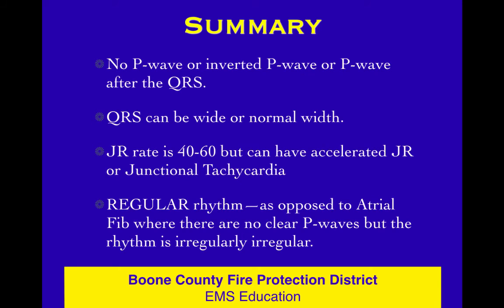Summary: there's no P-wave, or it might be inverted or after the QRS. The QRS can be wide if it's got a bundle branch block with it, or it could be normal if it doesn't. The rate's usually in the 40 to 50 range, but it could be accelerated up to 100 or over 100. But it's going to be regular — very, very regular. So atrial fib has no clear P-waves and it's irregularly irregular. Junctional has no P-waves usually, but it's going to be very regular. Repetition is the key, and we'll do lots of examples in the regular class.